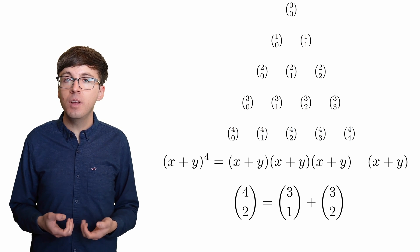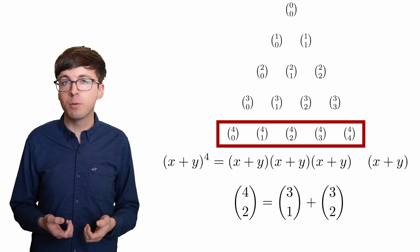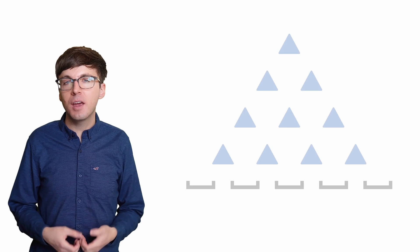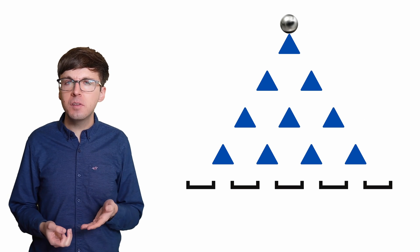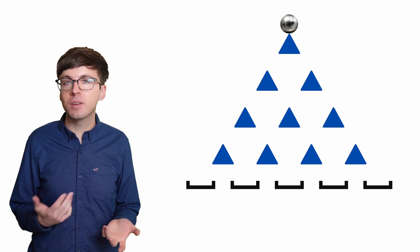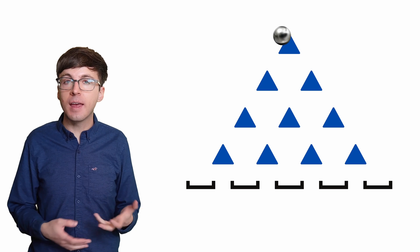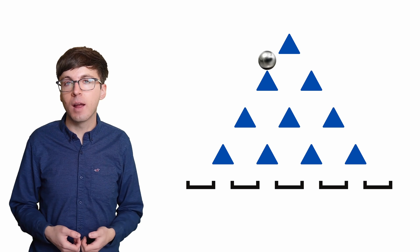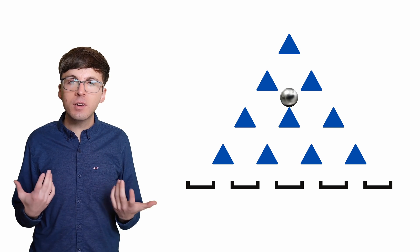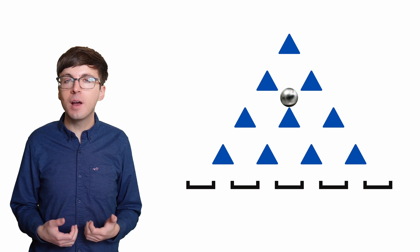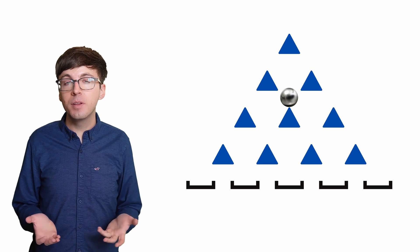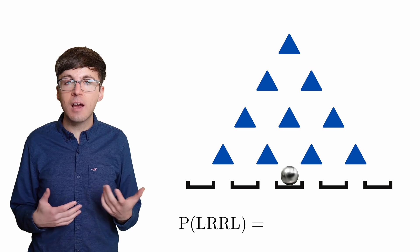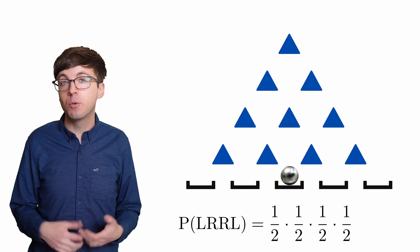Let's see how Pascal's triangle relates to probability in games of chance. Imagine a ball is dropped down a board. It hits a peg and has a 50-50 chance of bouncing left or right. Maybe it bounces left and hits another peg, again with a 50-50 chance left or right. If the board has four rows of pegs, the ball will end up in one of five slots. The probability of any specific sequence of moves — say left, right, right, left — is ½ × ½ × ½ × ½, which is one-sixteenth.